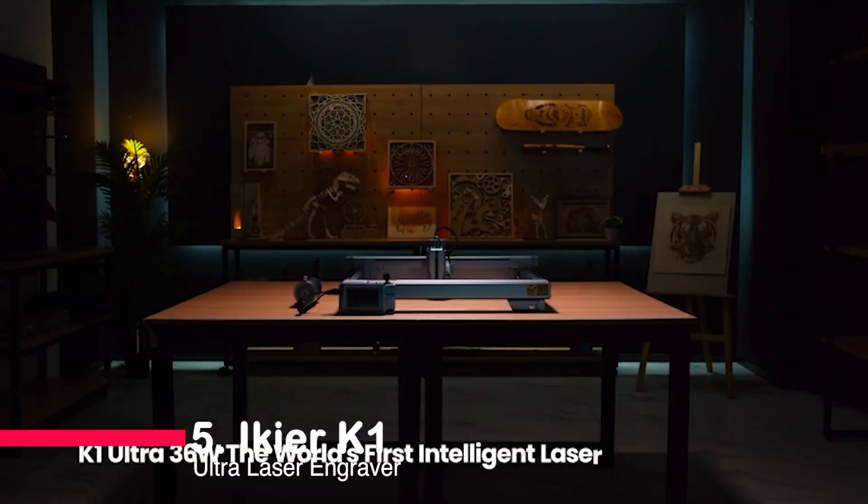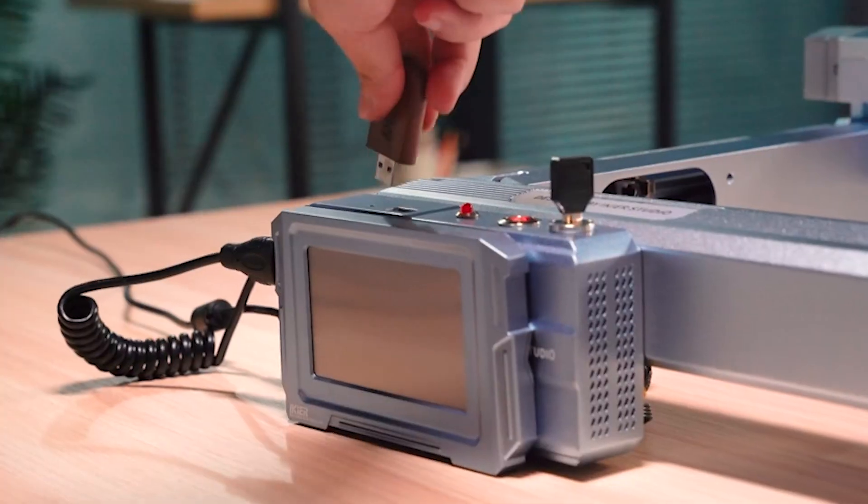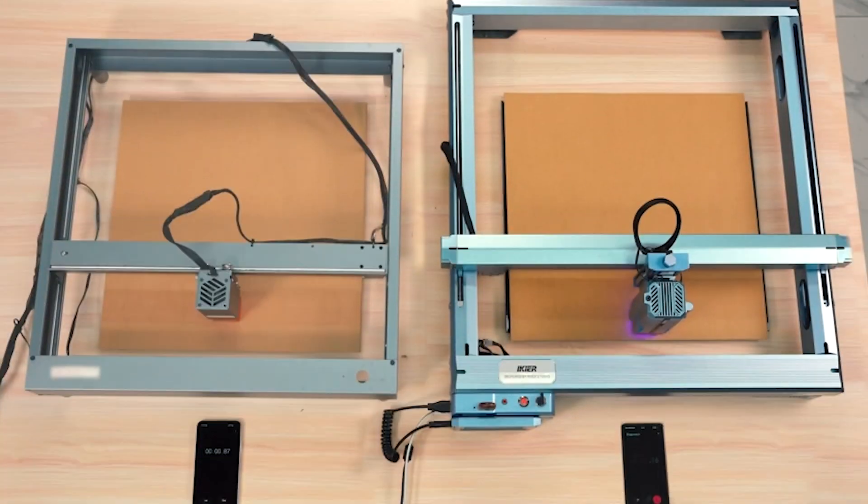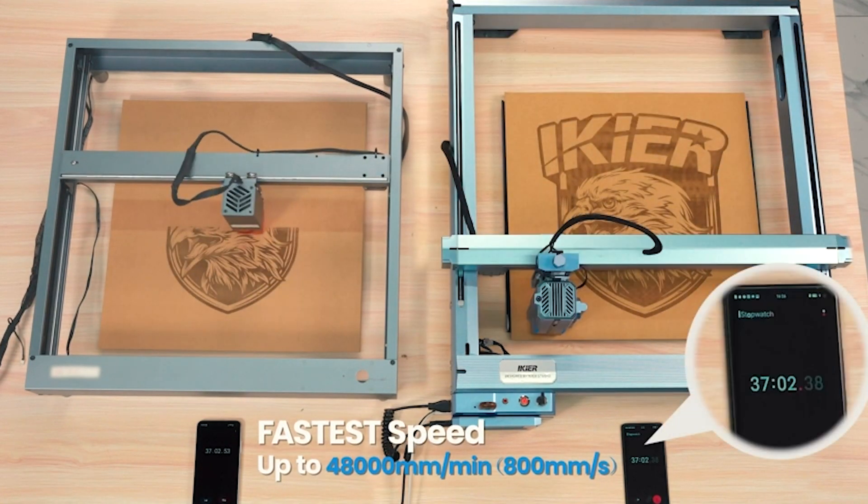Number five, Ikear K1 Ultra Laser Engraver. The remarkable Ikear K1 Ultra Laser Engraver with a powerful 36-watt output laser. It effortlessly engraves wood, metal, acrylic, and leather.